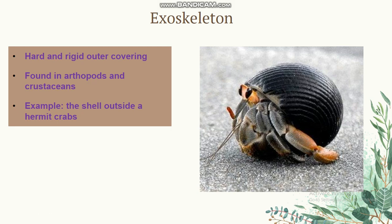Exoskeleton is a hard and rigid outer covering. Found in arthropods and crustaceans. For example, the shell outside a hermit crab.